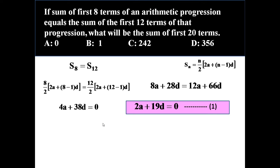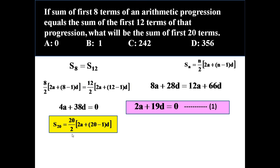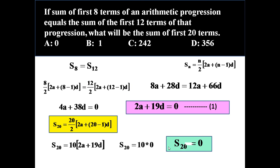Now we want to determine the sum of the first twenty terms. S20 = (20/2)(2a + 19d) = 10 × (2a + 19d). But from equation 1 we know 2a + 19d = 0, so S20 = 10 × 0 = 0. The answer is 0.